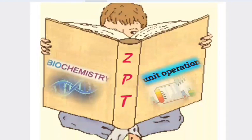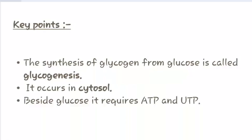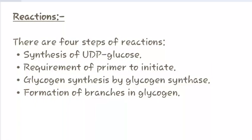I am Zeel Bhatt and welcome to my channel Zeel's Pharmacy Tutorial. Today we are going to study about glycogenesis. Let us have a look at the key points of glycogenesis. The synthesis of glycogen from glucose is called glycogenesis. It occurs in the cytosol and besides glucose it requires ATP and UTP. Now let us have a look at the reactions of glycogenesis.